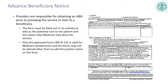An ABN is typically used when the healthcare provider believes that Medicare may not cover a service or item because it is not medically necessary, is considered experimental or investigational, or exceeds Medicare's coverage limits. The ABN must be given to the patient in advance, and the patient must sign the ABN to acknowledge that they understand the potential financial liability. It is important to note that an ABN does not guarantee that Medicare will not cover the service or item, but it does provide the patient with information about their potential financial responsibility.